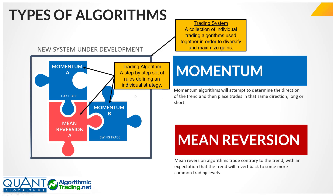I characterize that with a graphic where you have three trading algorithms: a Momentum A, which might be a day trade; a Mean Reversion Algorithm A; and a Momentum B, which might be a swing trade. You could have any number of these different algorithms within any given system, and all of these combined would represent a system.